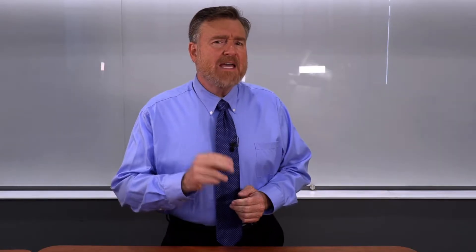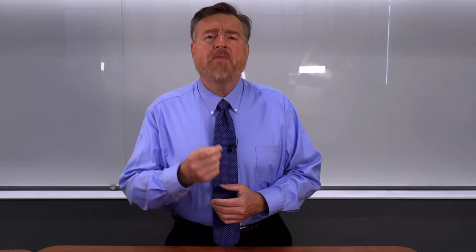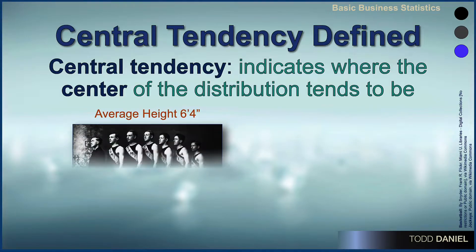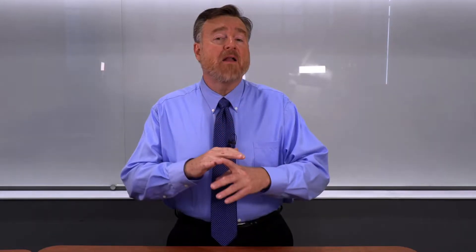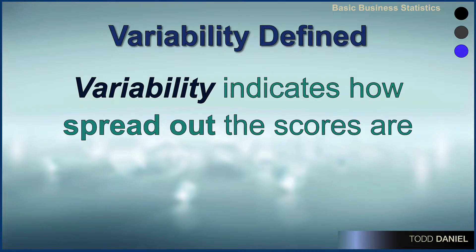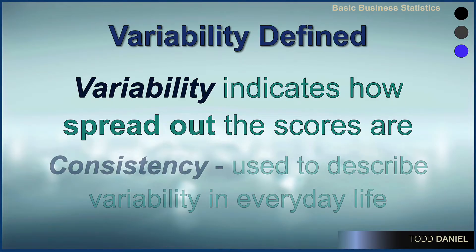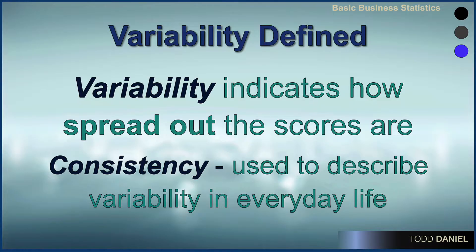But central tendency is just one of the four questions that we want to ask about our distribution. The second is about variability, or said a different way, about the consistency of the scores. What we find among our basketball players is they are consistently tall; among our horse jockeys, they are consistently shorter. But there can be great variability within a distribution, and that's going to affect the way that we interpret the average. Variability indicates how spread out or how close together the scores are in our distribution. When there are large differences among scores, the data are said to contain a lot of variability.